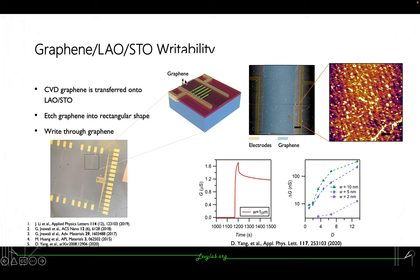This shows that ULV-EBL can pattern LAO/STO interface to be conducting with the graphene on top, so it writes through the graphene. We can see this is an AFM profile showing the LAO/STO terraces underneath the graphene to show the transfer quality.